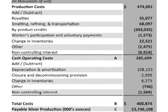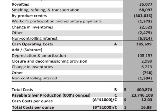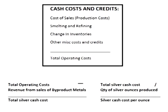For 2012, Pan Am's cash cost and total costs are provided in the annual report. Pan Am's cash cost in 2012 was $12.03 per ounce. Cash cost includes production costs, smelting and refining costs, changes in inventories, and other miscellaneous expenses, as well as the revenue from the production of byproduct metals.